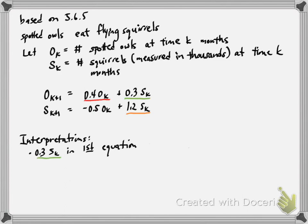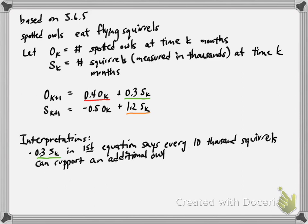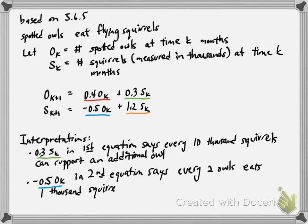The 0.3 times S K in the first equation says that every 10,000 squirrels can support an additional owl. And the negative 0.5 OK in the second equation is saying that every two owls would be eating 1,000 squirrels each month. So negative 0.5 times the number of owls is contributing to the squirrel population.